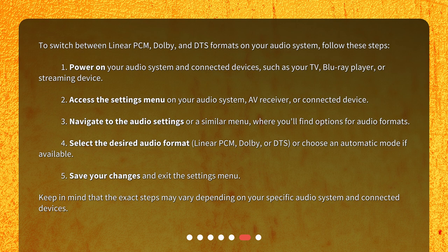Step 4: Select the desired audio format — Linear PCM, Dolby, or DTS — or choose an automatic mode if available. Step 5: Save your changes and exit the settings menu. Keep in mind that the exact steps may vary depending on your specific audio system and connected devices.